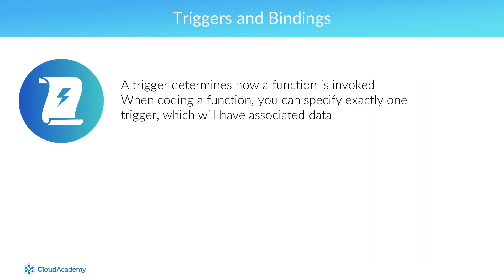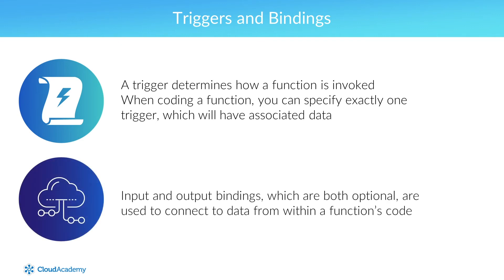Azure Functions supports multiple triggers and multiple bindings. A trigger determines how a function is invoked. When coding a function, you can specify exactly one trigger, which will have associated data. The data associated with a trigger is typically the payload that triggers the function to begin with. Input and output bindings, which are both optional, are used to connect to data from within a function's code. While a function can only have one trigger, it can have multiple input and output bindings.